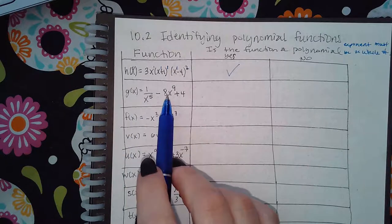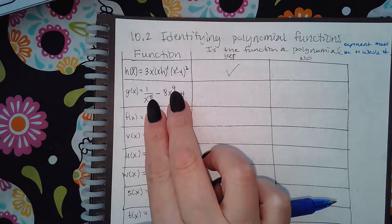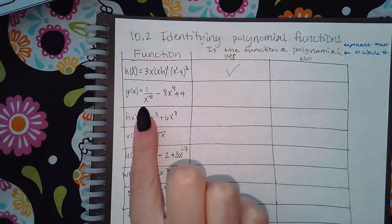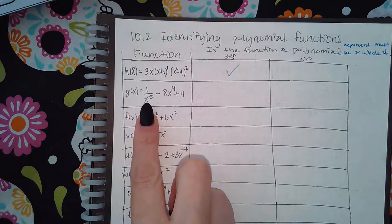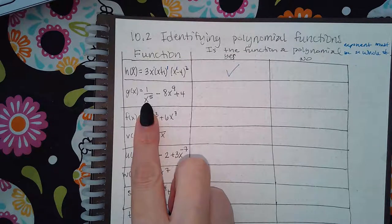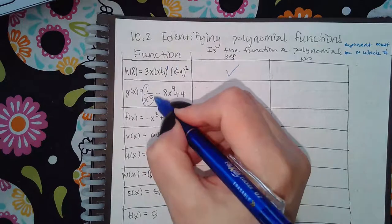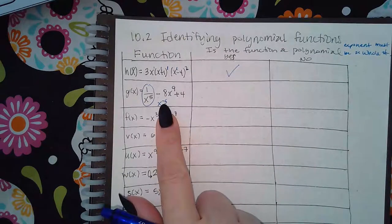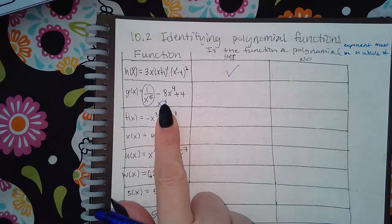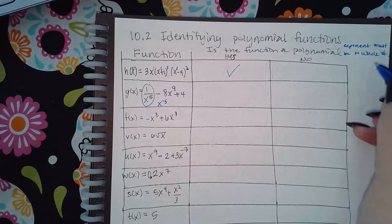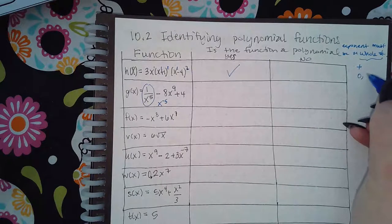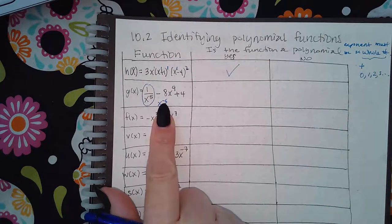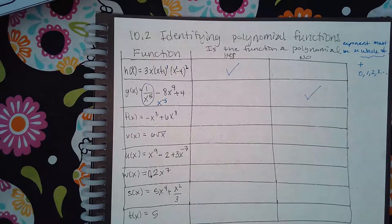For this one, it looks like exponents are positive and they are whole numbers. However, this expression is not an expression that has a positive exponent because this factor right here can be written as x to the negative five. And that means that the exponent is actually a negative exponent. And I'm looking for whole numbers, which are positive. It's zero, one, two, three, so on and so forth, but positive. And that negative five doesn't fit the description. So this is no, not a polynomial.